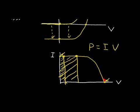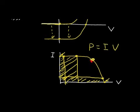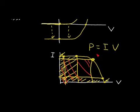By operating at different points on the curve we can extract different amounts of power, represented by the rectangle area at each operating point. We want to maximize this particular area — this is called the maximum power point. We would like circuits that always operate the solar cell at this maximum power point so we can extract the most usable energy from the solar cell.